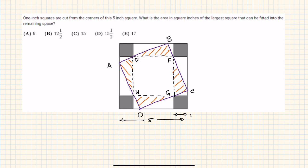Most of you considered EFGH as the largest square that could be fitted into this remaining space, but you didn't think of another square of the type ABCD. Some of you also took another assumption where you joined the midpoints and considered that to be the requisite square, but that's not the case.